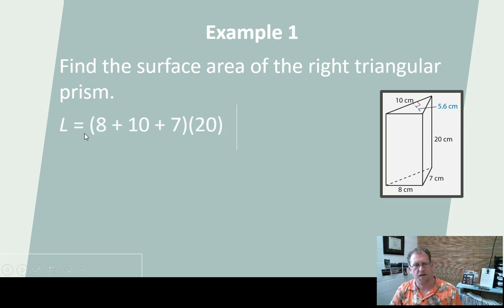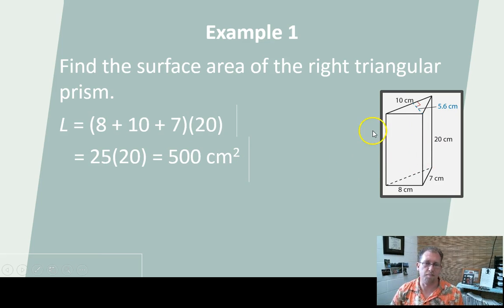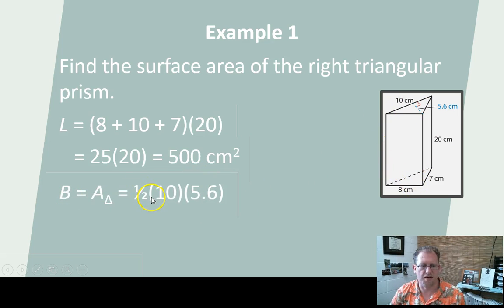So let's work this problem. The lateral area is 8 plus 10 plus 7, which is 25, times 20. So 25 times 20 is 500 square centimeters. That's all of these surfaces. Now I need to get the bases, the two triangles. The formula for triangle is one-half times base times height. The base is 10. The height is 5.6. 5 times 5.6 is going to be 28 square centimeters. So that's one of the triangles.